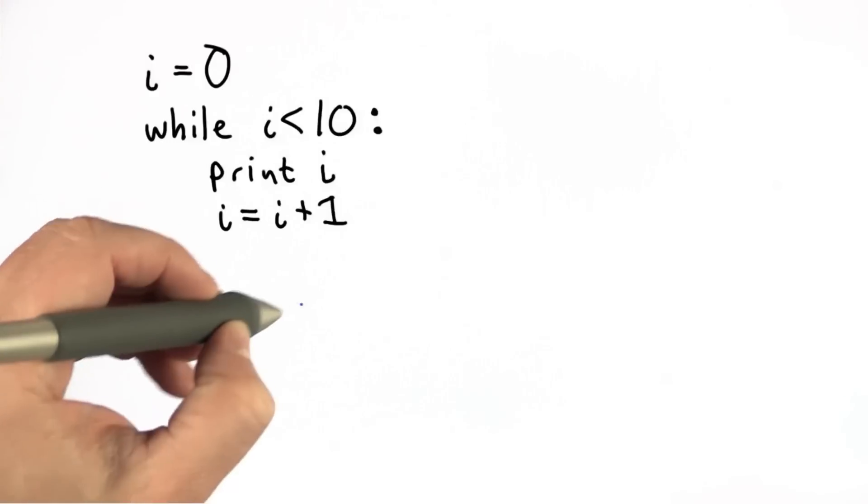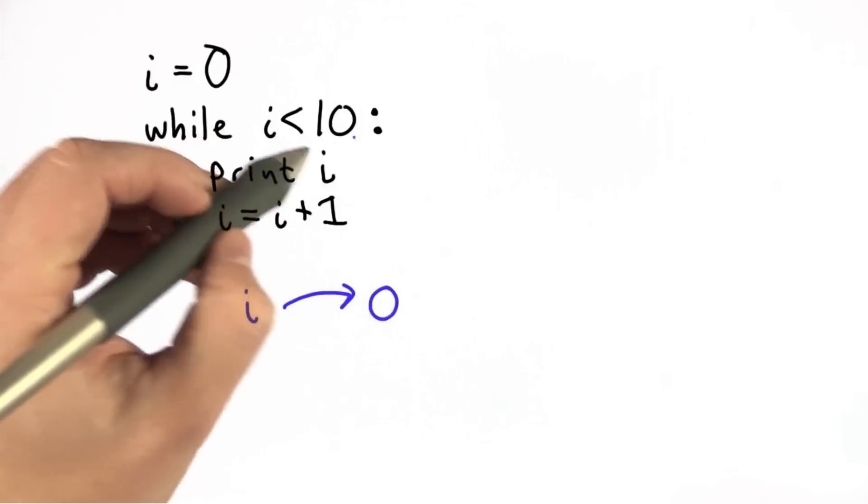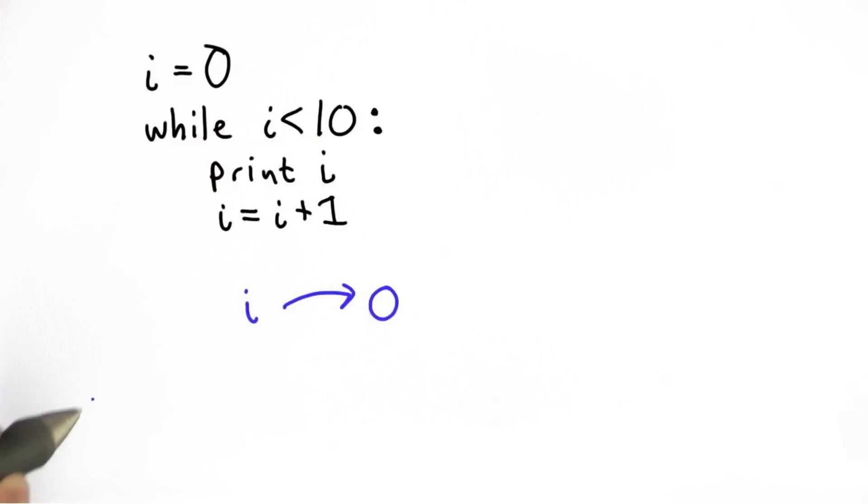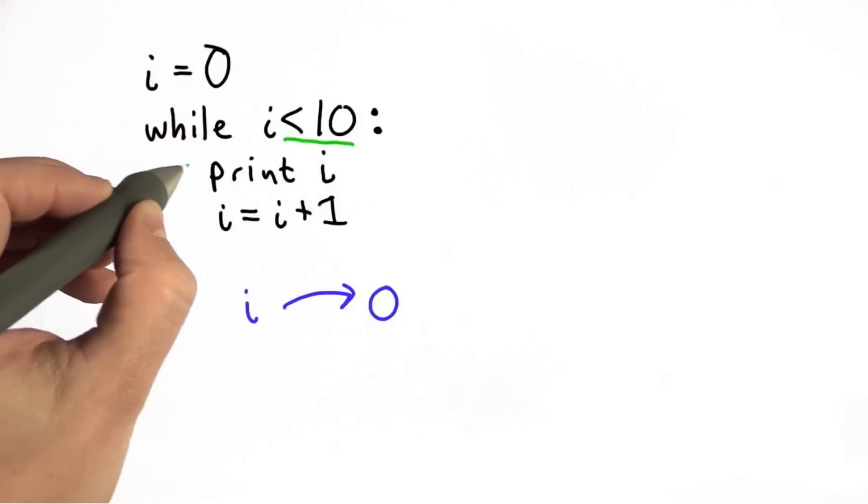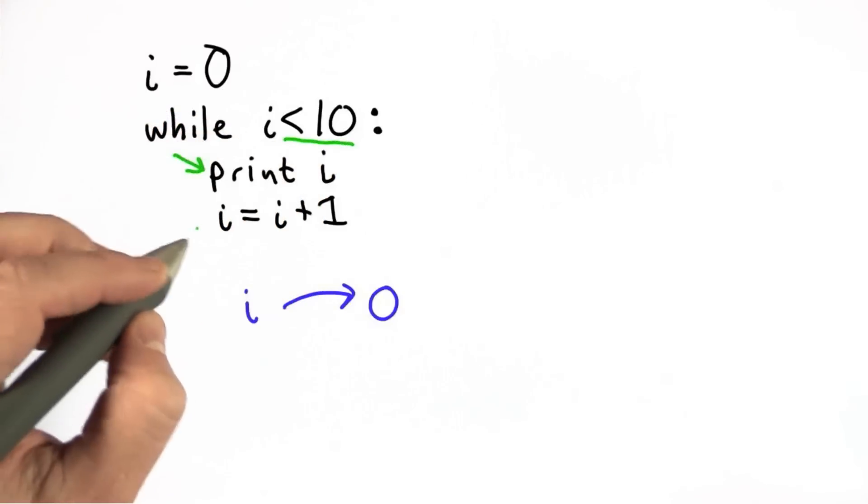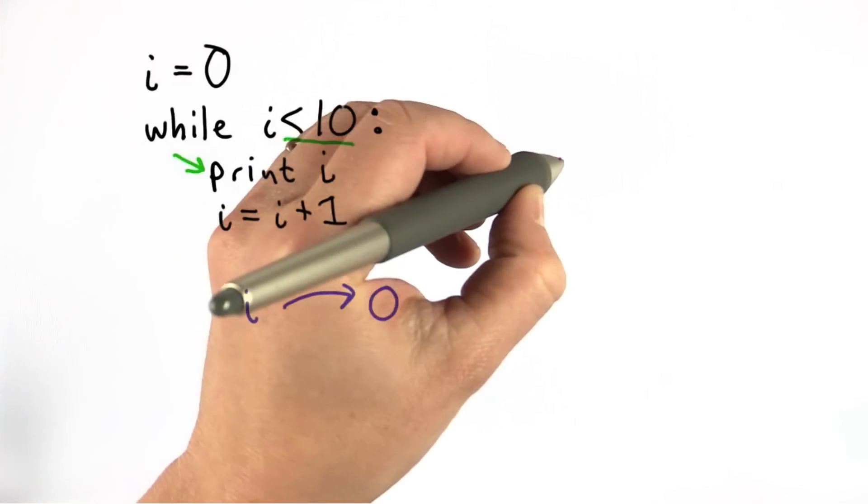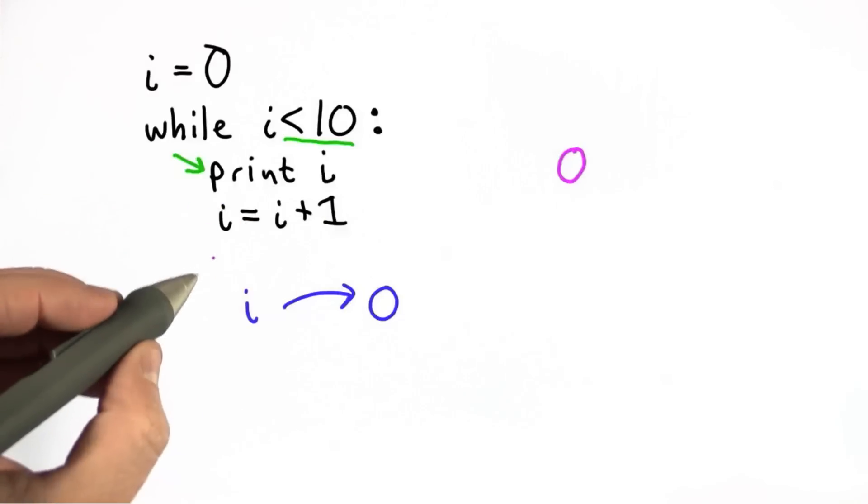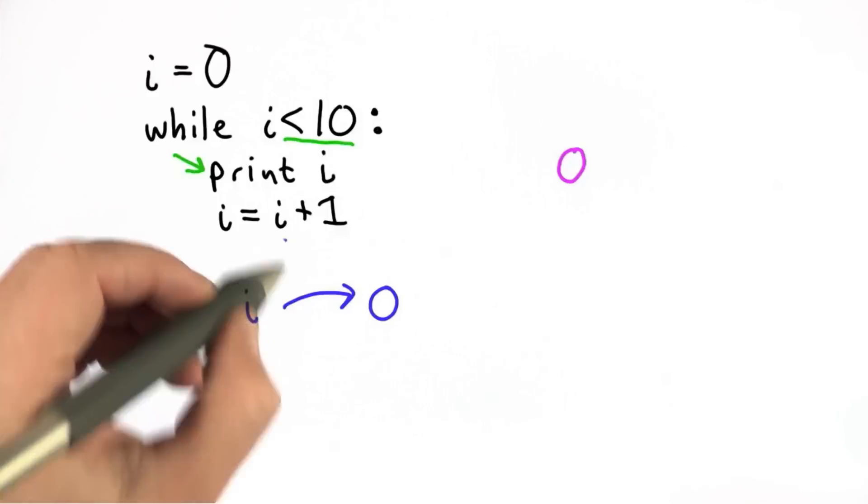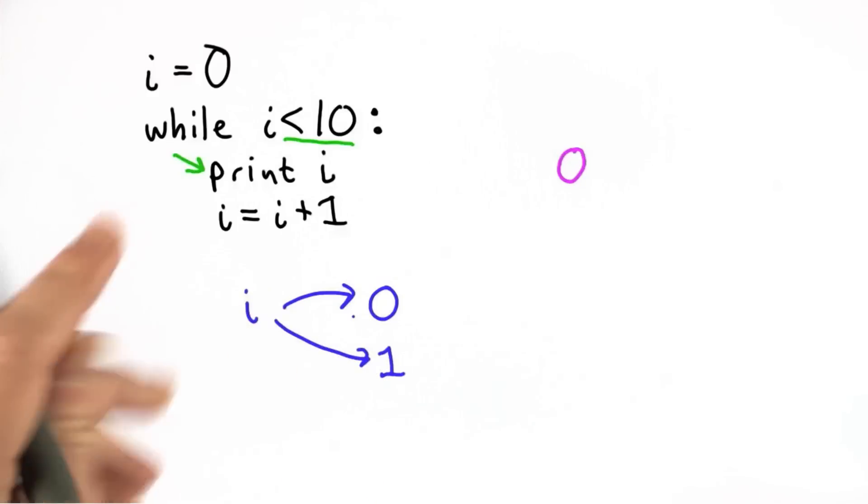So here's what happens when this executes. Initially the value of i is 0. i is less than 10. So that means we'll enter the loop. So that means the test expression is true. So we'll enter the block. We'll print i. So we'll see the value 0 printed. And then we'll do the assignment. So that will change the value of i. We add 1 to i. So that's going to be making the value of i now refers to 1.